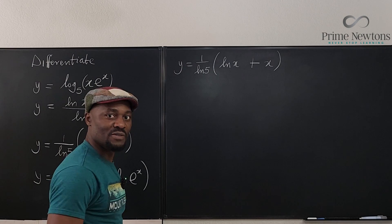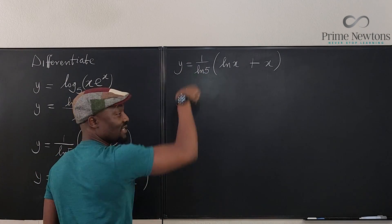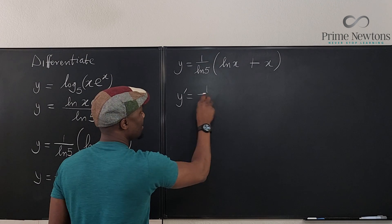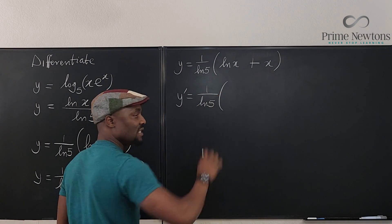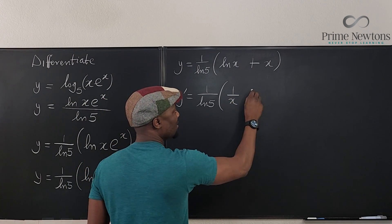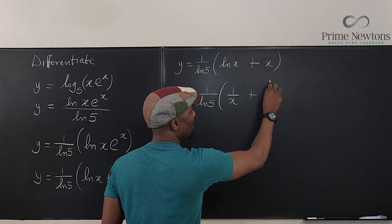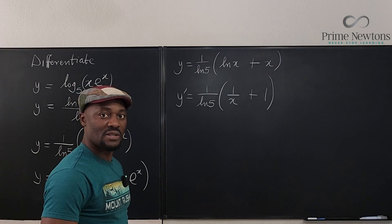Now I can take the derivative. What is y prime? Well, this is a number, so I just keep it. It's a constant, ln of five. What's the derivative of ln of x? It's one over x. What is the derivative of x? It is one.